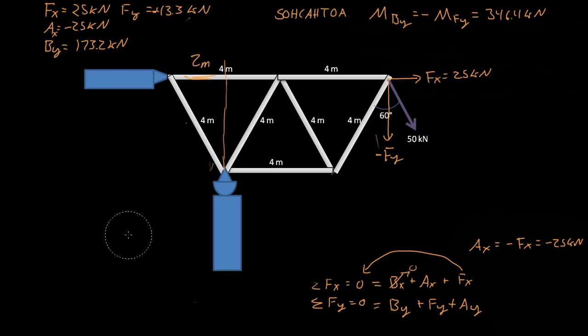So if we go back down here, we now know what By and Fy are, so now we can calculate what Ay is. So negative Ay is equal to By plus Fy.